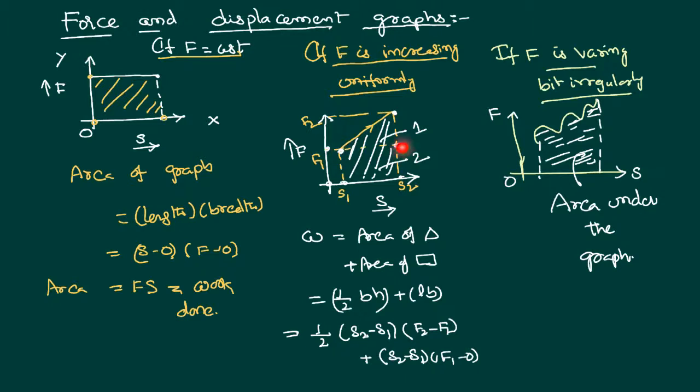Base is from s1 to s2, therefore s2 minus s1. Height is from f1 to f2, therefore f2 minus f1. Similarly for the rectangle, length is from s1 to s2, therefore s2 minus s1. Breadth is from 0 to f1, therefore f1. By multiplying these values we can get the work done.